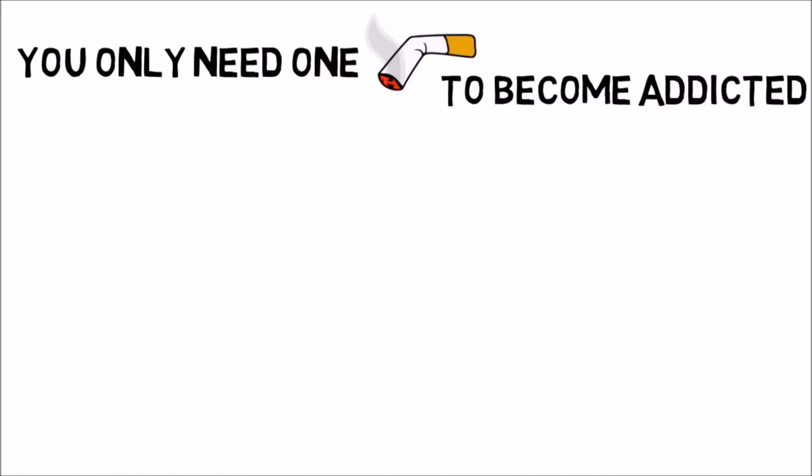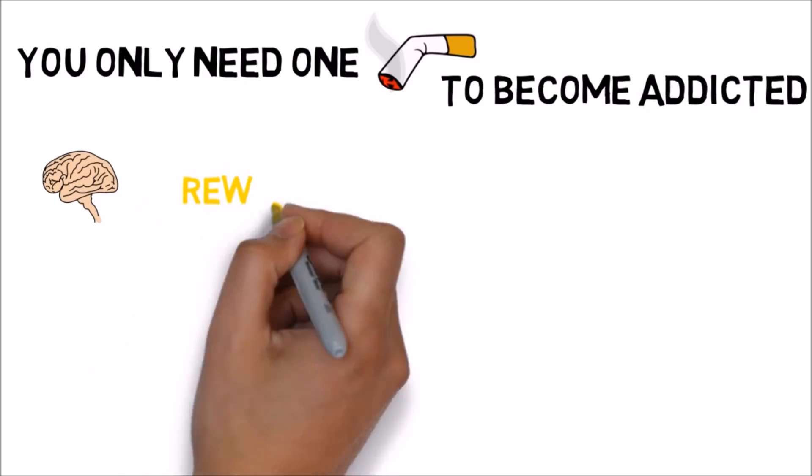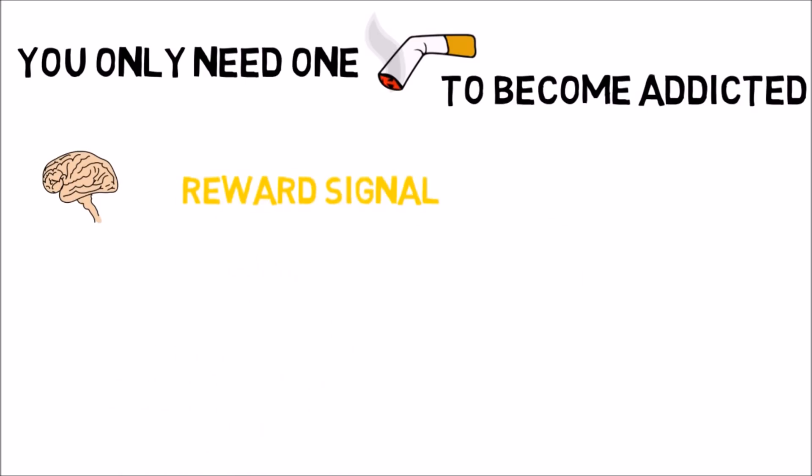New research has shown that smokers can become addicted from their first cigarette. Scientists have discovered a part of the brain which can affect how long it takes before smoking becomes a compulsion rather than a habit. In some people, the chemicals in cigarettes initially trigger a strong reward signal from the area. The same part of the brain has previously been linked to the process by which people become addicted to alcohol and cocaine.